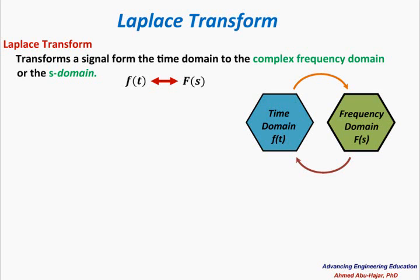Let me show you a very simple example: cosine of 300t. If we look at this signal in the frequency domain, all I have to tell you is that the frequency is 300 radians per second. The information about the frequency is enough to describe how the cosine function looks. Basically, whether I tell you the time content or the frequency content of the signal, it is the same thing.